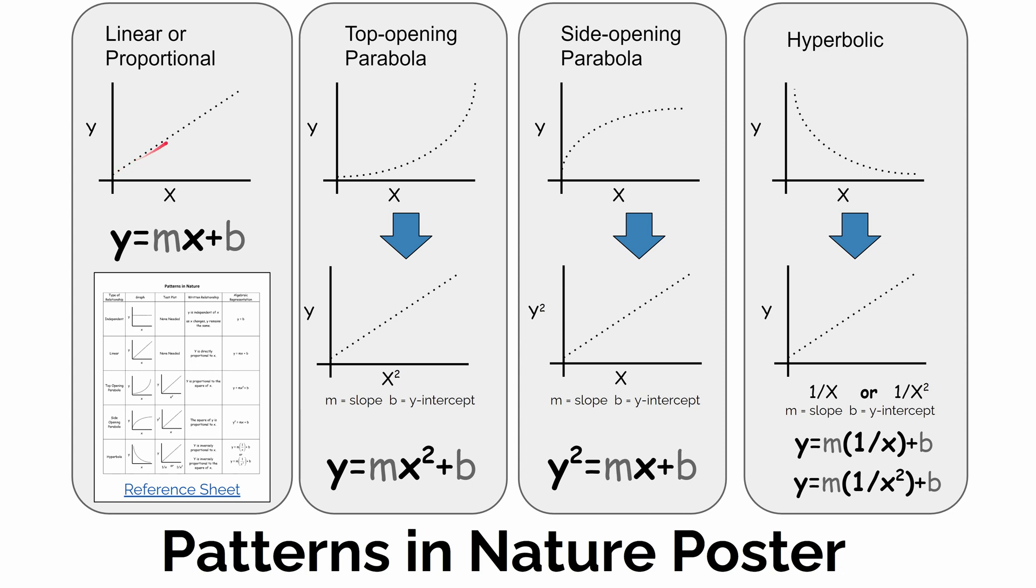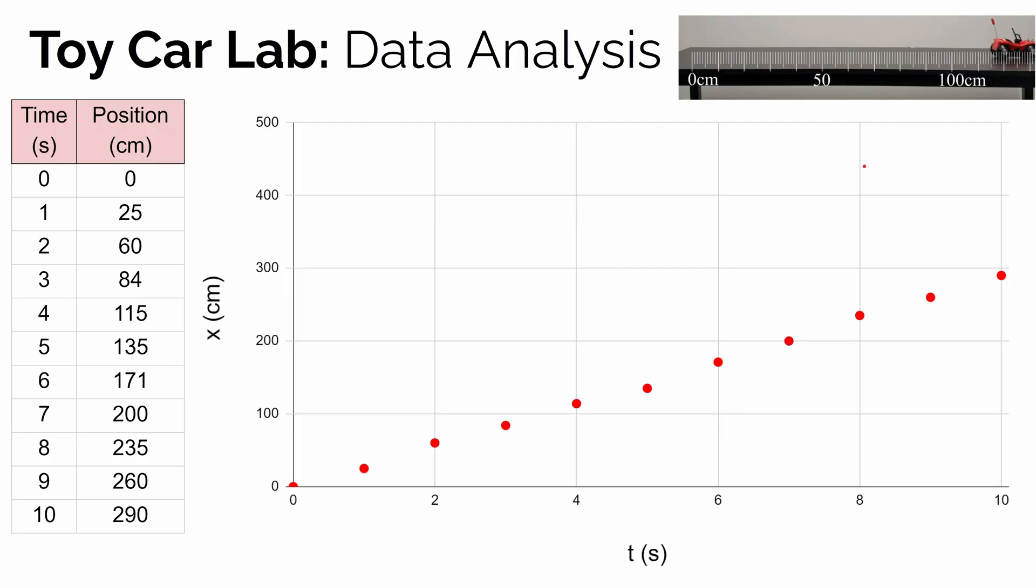When we graph one thing versus the other, oftentimes we get linear relationships. Sometimes they're curved up, we call those top-opening parabolic relationships. Sometimes they're curved but on the side, we call that a side-opening parabolic relationship. Or sometimes as one variable increases, the other one decreases over time, and we call those hyperbolic relationships. If we go back to our specific graph, our position versus time graph, our data's not perfect, but it looks fairly linear. The trend is linear and increasing.